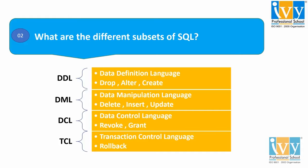Second, DML — it stands for Data Manipulation Language. DML allows us to access and manipulate data. It helps us to insert, update, and delete, and also retrieve data from the database. Third, DCL — the DCL stands for Data Control Language. DCL allows us to control access to the database, for example, GRANT and REVOKE access permissions.